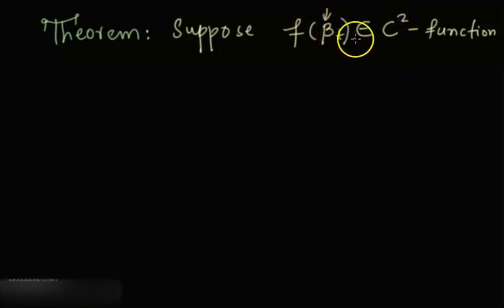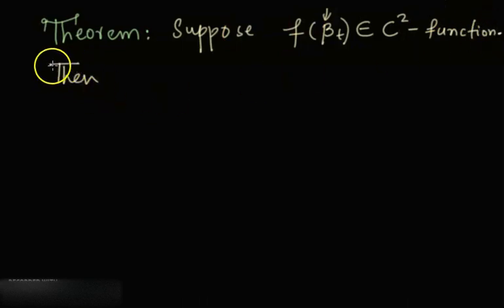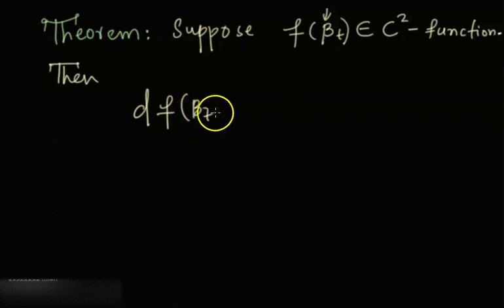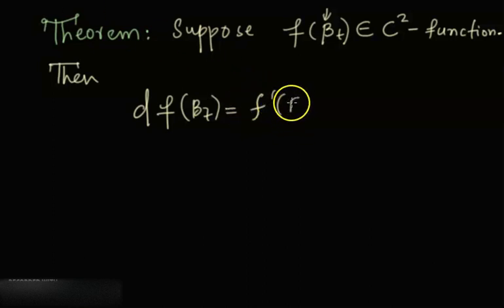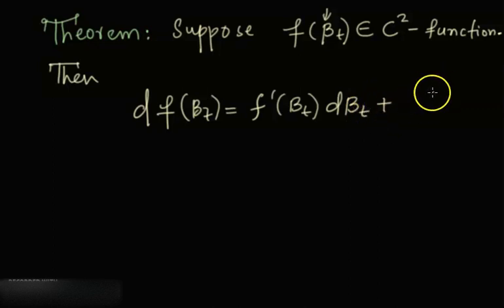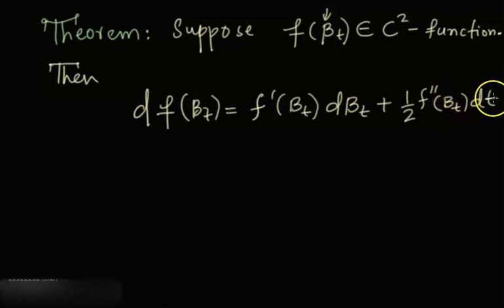If it were C1, it would be once differentiable with its first derivative continuous. So if you have a C2 class function, then its differential is given by: the first derivative of f evaluated at B(t) times dB(t), plus one-half times the second derivative of f evaluated at B(t) times dt.